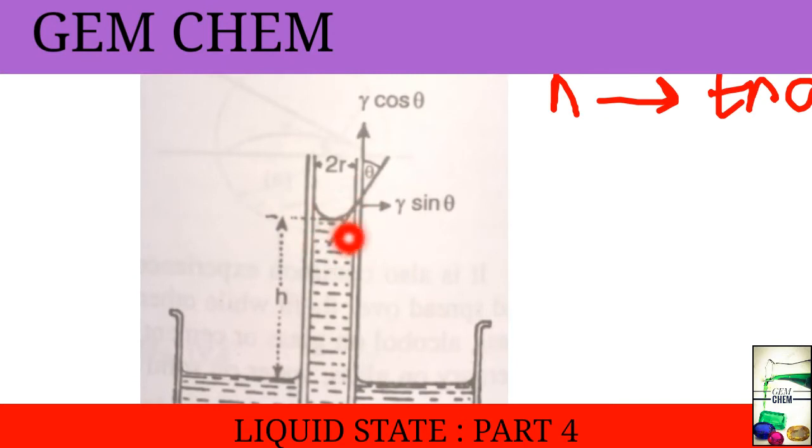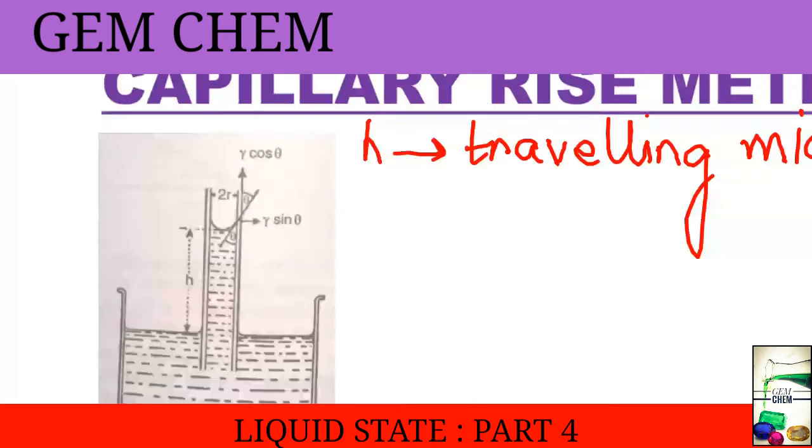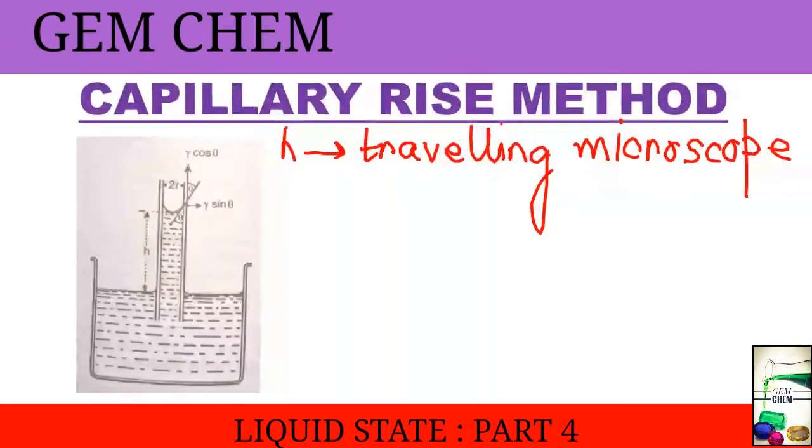And the contact angle is taken to be theta and we should consider the vertical component of surface tension to be gamma cos theta. And this gamma cos theta basically is the vertical component of surface tension. And the contact line of the meniscus with the wall of the tube is 2πr because this part makes a circle. So this contact part is 2πr. So we can write the upward pull which the liquid experiences to be as basically 2πr for the circumference and gamma cos theta.